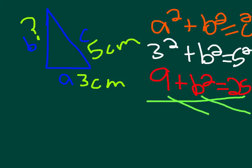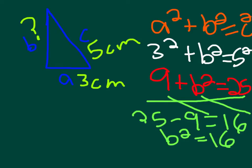Let's write that out. 25 minus 9 equals 16. So that equals b squared.